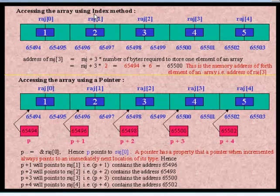This is an array with elements RAJ[0], RAJ[1], RAJ[2], RAJ[3], and RAJ[4]. Their addresses are 65494 to 65503, totaling 10 bytes because this is an integer type array. Now we want to find the address of RAJ[3].